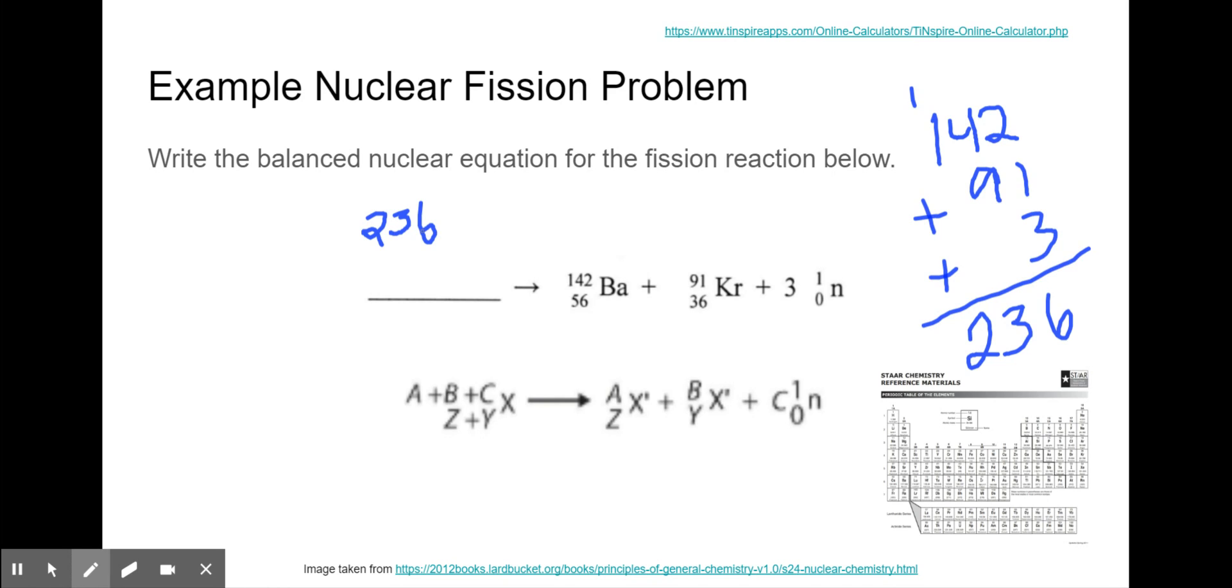Now I'm going to add the number of protons from the product side to see how many protons should be on my reactant side. So 56 plus 36 gives me 92. So if I look at my periodic table, the element that is associated with 92 protons is uranium. So the reactant to this fission problem was uranium-236.